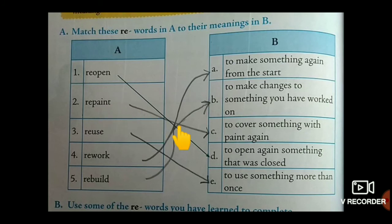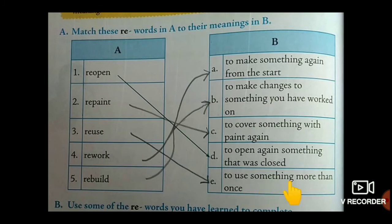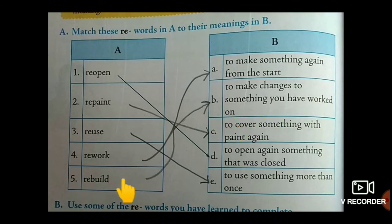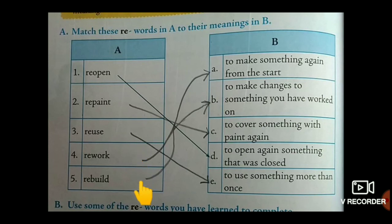Next: re-paint means to cover something with paint again. Re-use means to use something more than once. Re-work means to make changes to something you have worked on. Re-build means to make something again from the start. So, totally, the meaning of 're-' is 'again.'